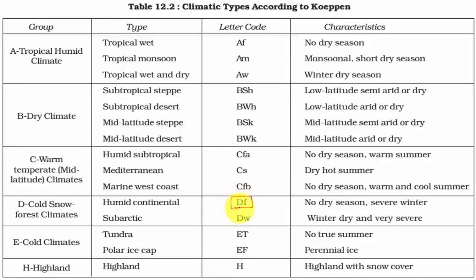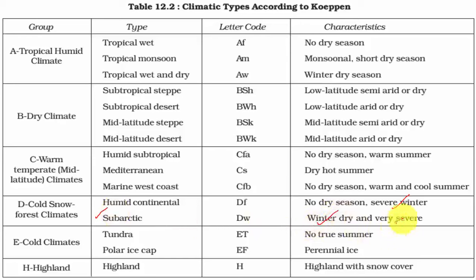The Laurentian type is represented by the alphabets D and F, where D stands for cold snow forest climates and F stands for wet type, where there is no distinct dry season, or if there is one it is of very short duration, and winters are severe. In the taiga or sub-arctic type, winters are dry and much more severe compared to the Laurentian or humid continental type.